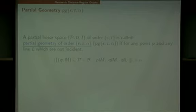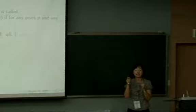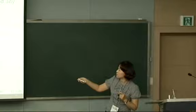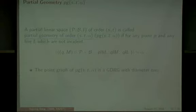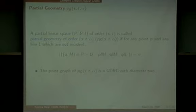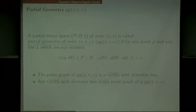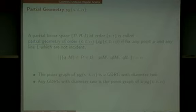A partial geometry of order (s, t, alpha) means a partial linear space of order (s, t) such that for any non-incident pair P and L, there are exactly alpha lines through P which intersect the given line L. A partial linear space requires that any two distinct points lie on at most one line, and any two distinct lines intersect in at most one point. The point graph of any partial geometry becomes a geometric distance regular graph of diameter 2. Conversely, any geometric distance regular graph of diameter 2 is the point graph of some partial geometry — so the two concepts are equivalent for diameter 2.